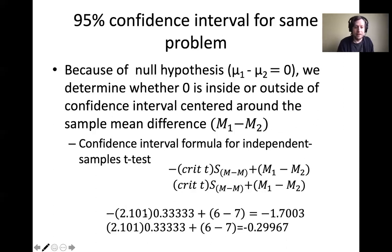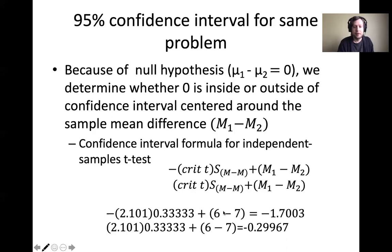Take that critical t from the t-table and multiply it by the estimated standard error, then add negative 1 — we get negative 1 because the sample means are 6 minus 7. So you take negative 1 as the difference, add the left-side product, and get negative 1.7003 for the lower bound. Do the same with the positive critical t and get negative 0.29967 for the upper bound. This is our confidence interval — both numbers are negative, so make sure you don't miss that negative sign.